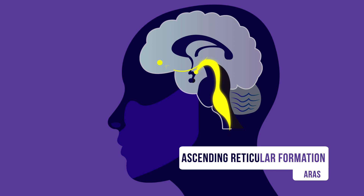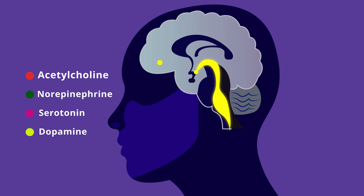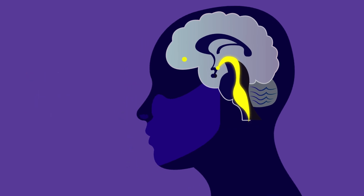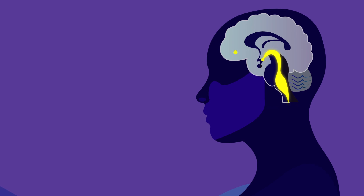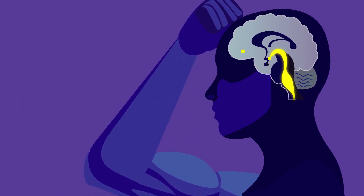The ARAS sends excitatory signals in the form of neurotransmitters — acetylcholine, norepinephrine, serotonin, and dopamine — to excite the cerebral cortex, where vivid experiences such as vision, touch, and sounds are generated. The brain also keeps the muscles active during wakefulness, so the person can carry out actions based on vivid perceptions.